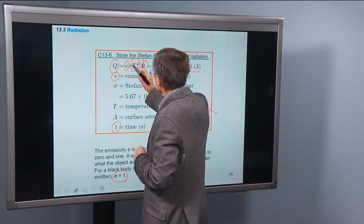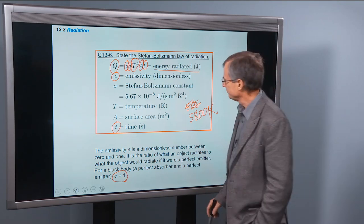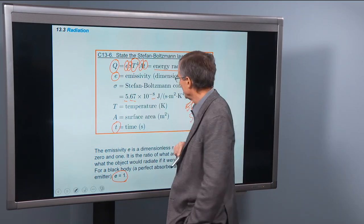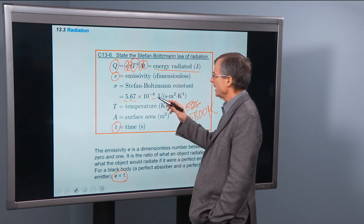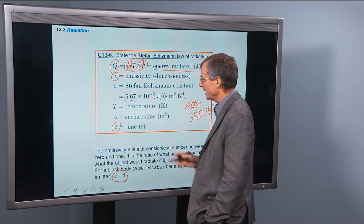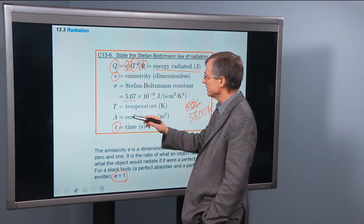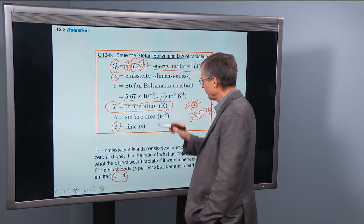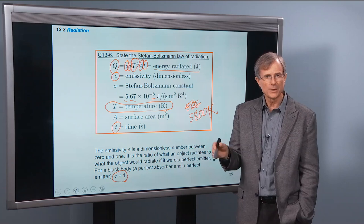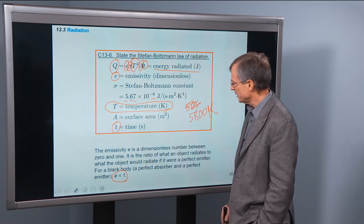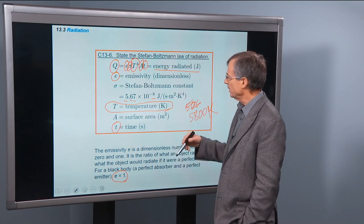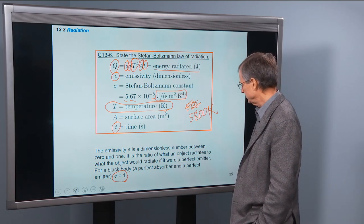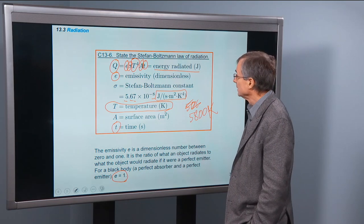The only other parameter here is called the Stefan-Boltzmann constant. Not a difficult one to remember: 5.67 times 10 to the minus 8. 5, 6, 7, 8. And then whatever the units turn out to be to make this equation work out. This has to be in joules. Emissivity is unitless, doesn't have any units. Temperature is measured in degrees kelvin. This temperature for the Stefan-Boltzmann law has to be measured in kelvin. It doesn't work in Fahrenheit or Celsius. Area is measured in square meters, time is measured in seconds.